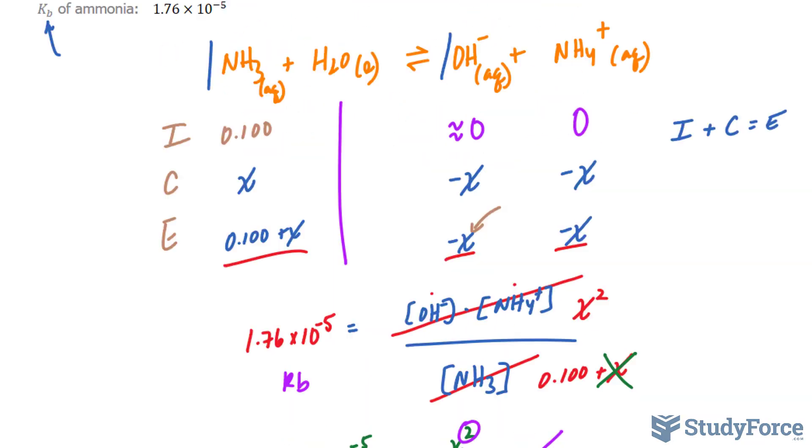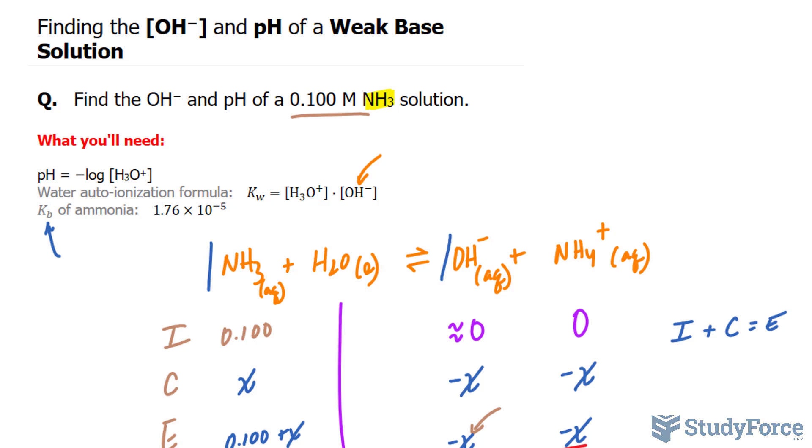And there you have it. That is how to find the OH minus concentration and pH of a weak base solution.